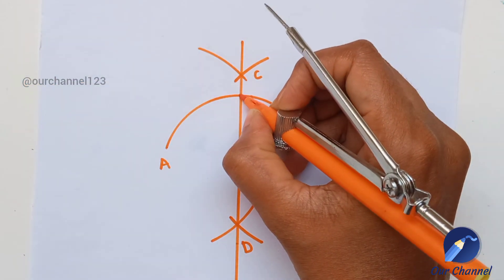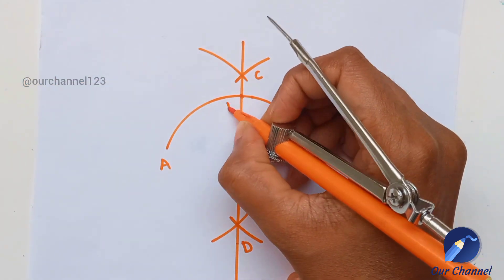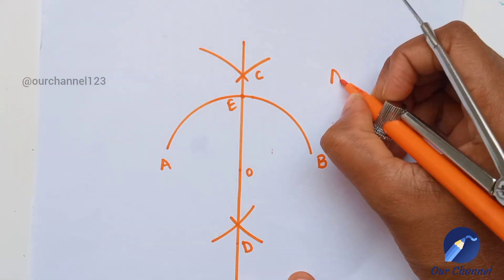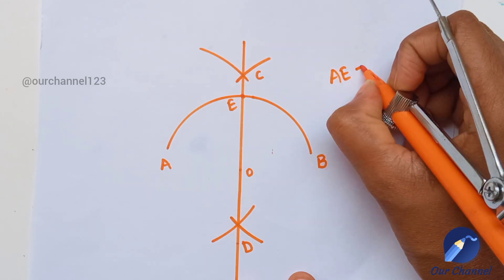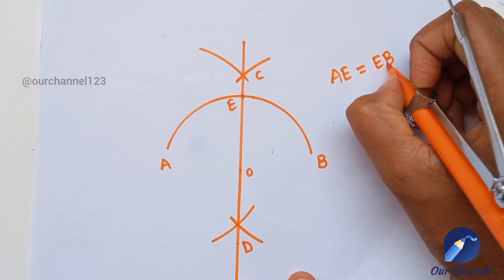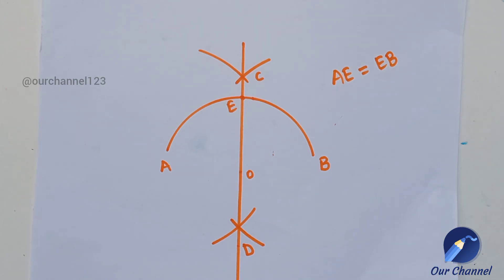The line will intersect the arc at E. The arc is divided into two equal parts AE and EB. Thank you for watching.